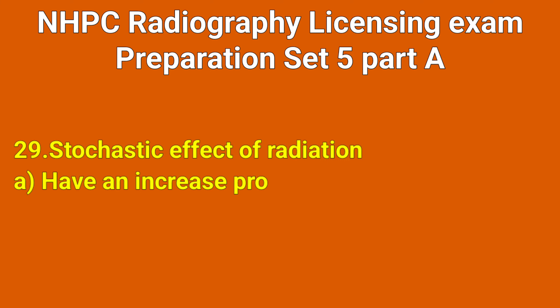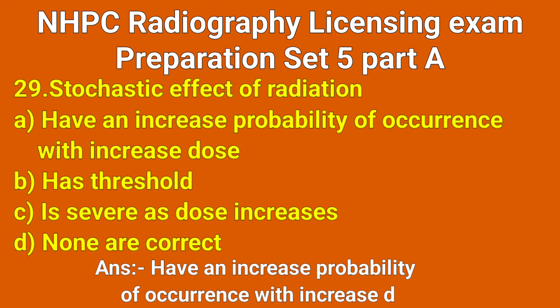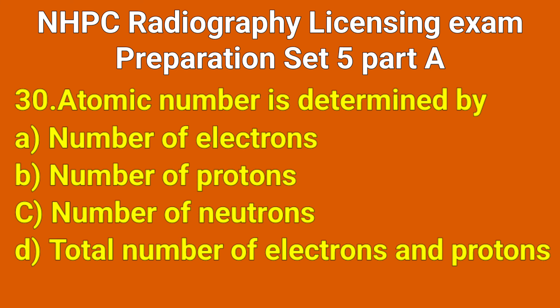Question number 29: The stochastic effect of radiation — which option? Question number 30: Atomic number is determined by which option? Correct answer: option B, number of protons.